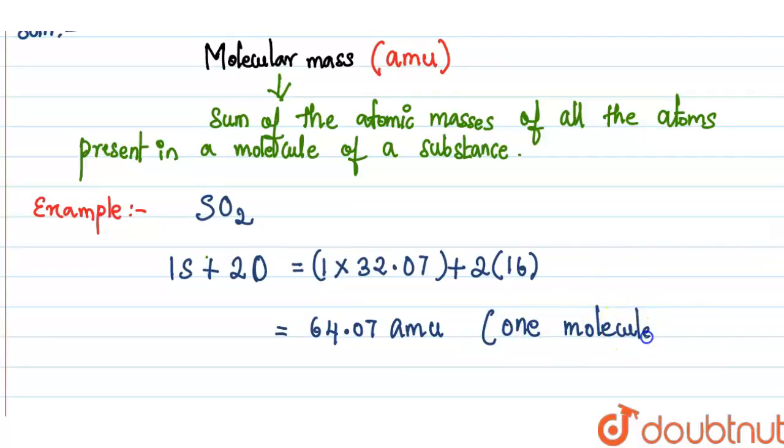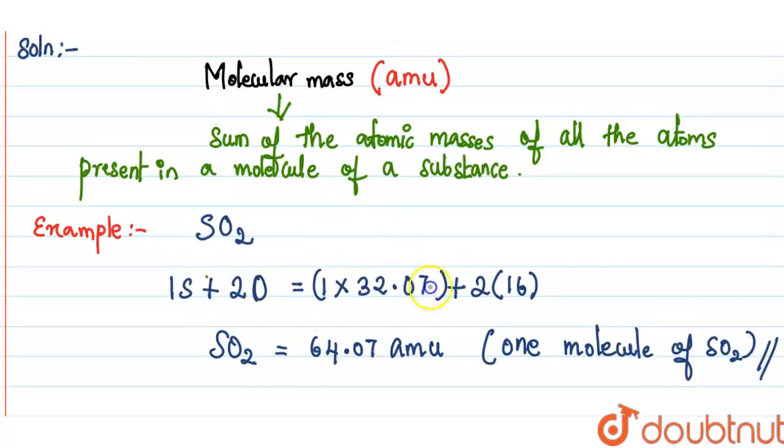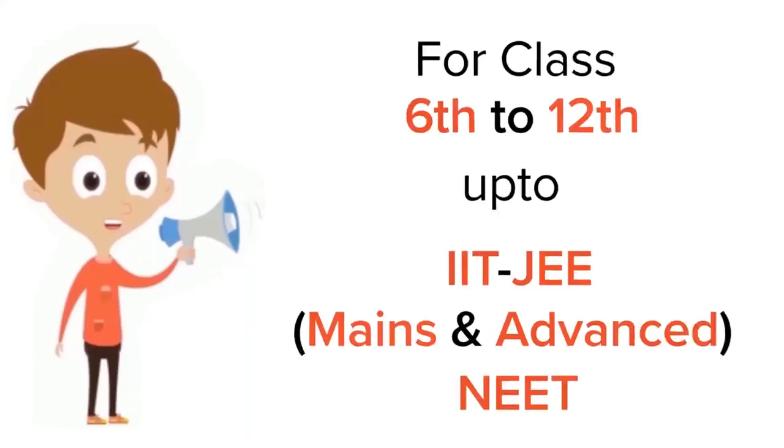This is one molecule. One molecule of SO2 is 64.07 amu. This is something about the example of molecular mass. Thank you.